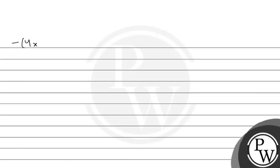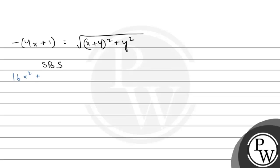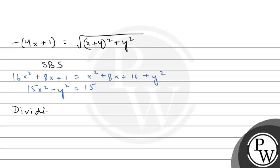So −(4x + 1) equals √[(x + 4)² + y²]. Now squaring both sides: 16x² + 8x + 1 equals x² + 8x + 16 + y². The root cancels and we open the brackets. In the next step we get 15x² − y² equals 15.